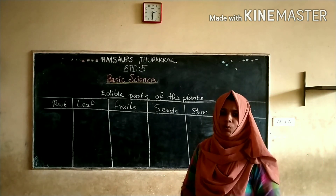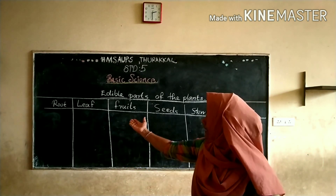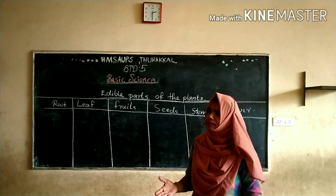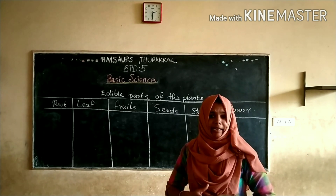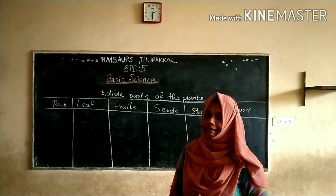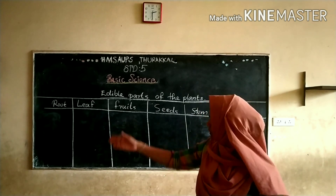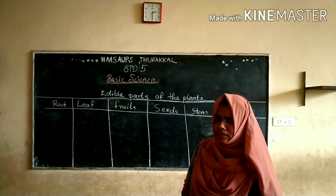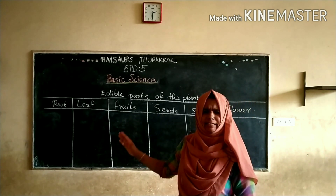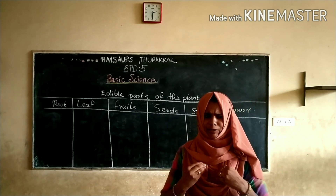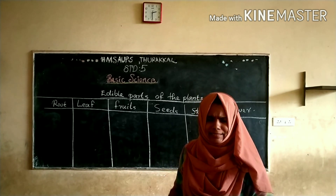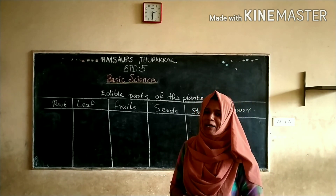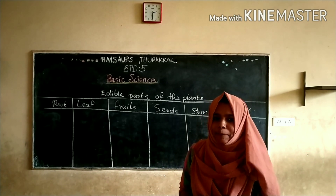Dear students, what can you see in our plant board? Yeah, edible parts of plants. We studied what are the edible parts of the plants. So, I can lay that in six columns. I want to see this table. I want your help for this, so you must see some examples for each column.